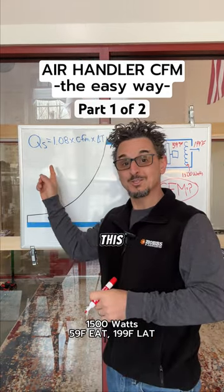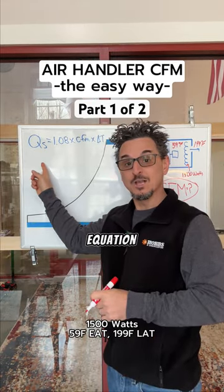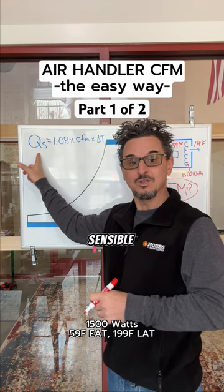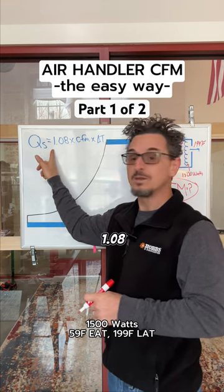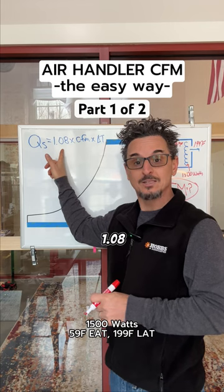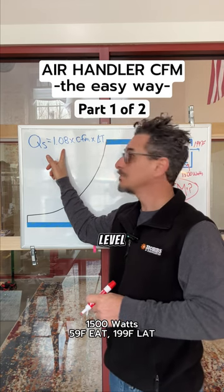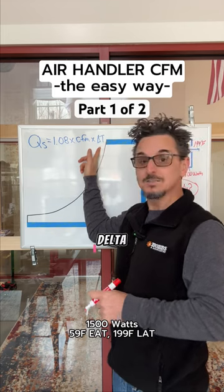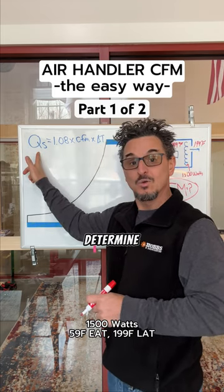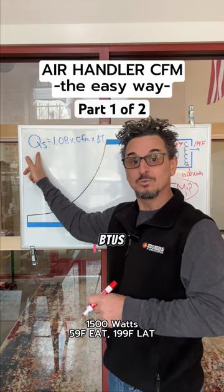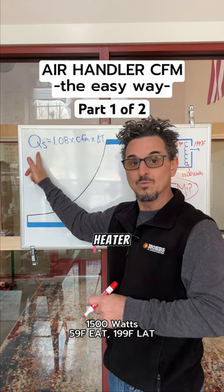To answer this question, we're going to use the sensible heat equation: QS is the sensible heat, or BTUs per hour, which equals 1.08 at standard air conditions at sea level, times CFM, times Delta T. We're going to solve for CFM and determine what the BTUs per hour are from the electric heater wattage.